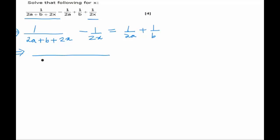So the LCM would be 2x into 2a plus b plus 2x and the numerator would have 2x minus 2a plus b plus 2x, and this is equal to on the other side 2ab as the LCM with b plus 2a in the numerator.